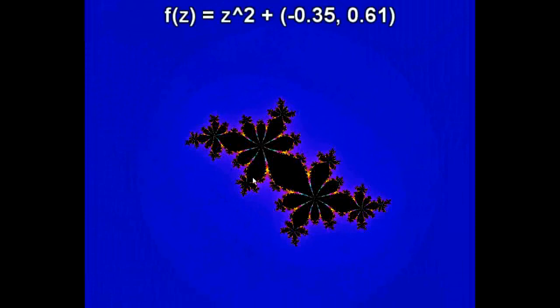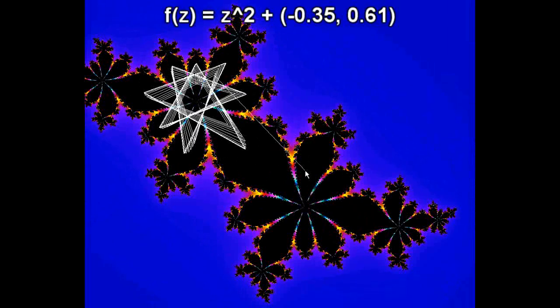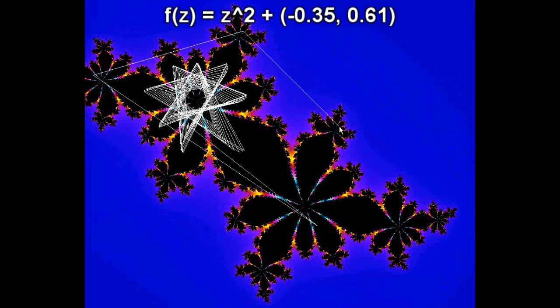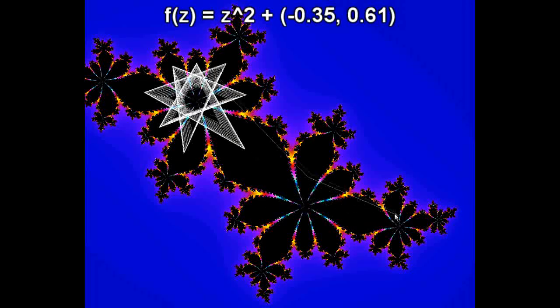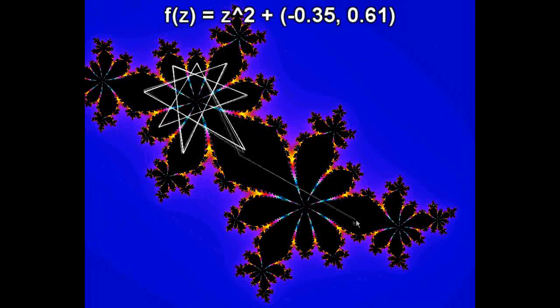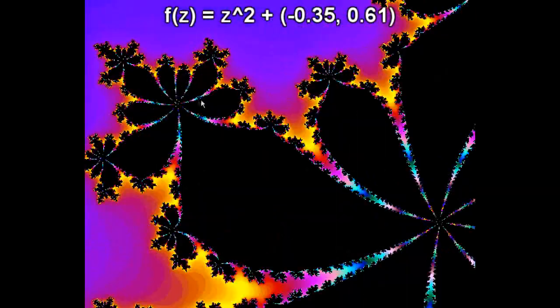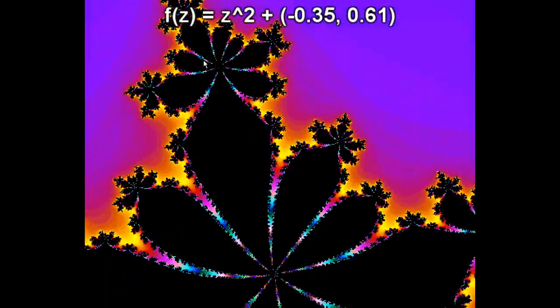So points here again, they stay bounded. Points here, escape to infinity. Let's try adding some other constant. For example, here I'm adding negative 0.35 and 0.61 imaginary. So this is what we get. Look, there's some really weird stuff going on. These points that converge, they basically just travel there and they get stuck in loops in there. And points outside here escape. So that looks pretty cool. And of course this is a fractal and you can zoom here until infinity. And this pattern basically recurs.